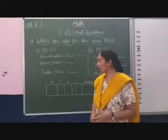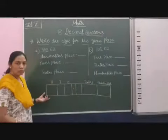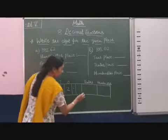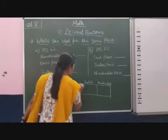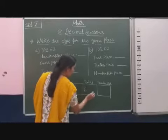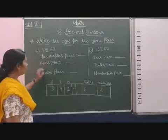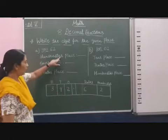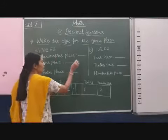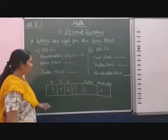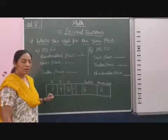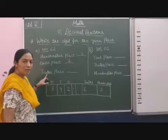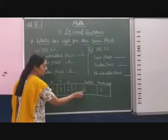For clear understanding, we will write this in a place value chart: 392, then the decimal point, then 62. That means 6 is in the tenths place and 2 is in the hundredths place. So the hundreds place value is 3, the tens place value is 9, and the ones place value is 2. The tenths place is 6.